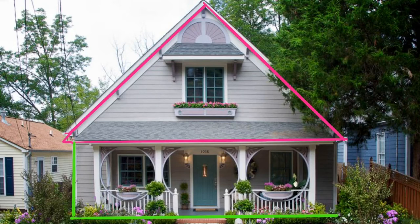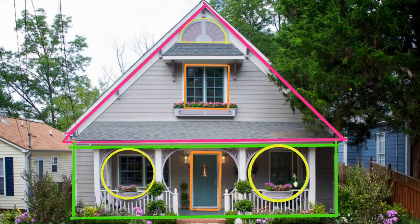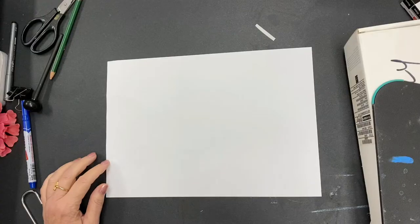Now let's see how many shapes we can find in this house. There's a triangle and a rectangle, a square, another rectangle and a couple circles. Okay, it's our turn to put those shapes together and let's make a drawing.